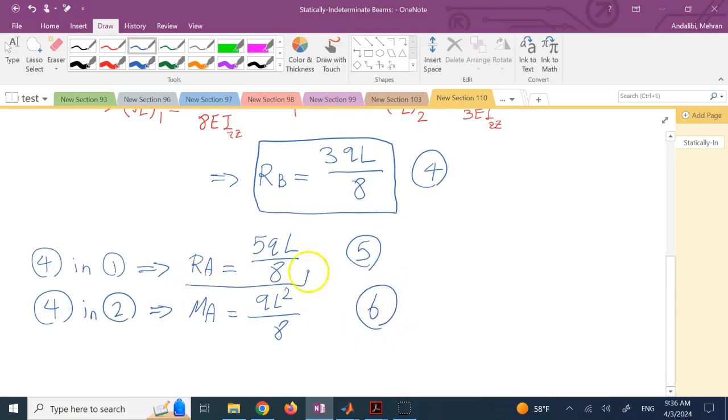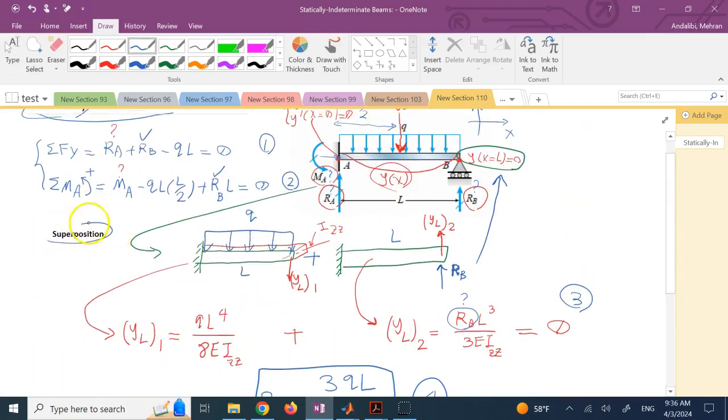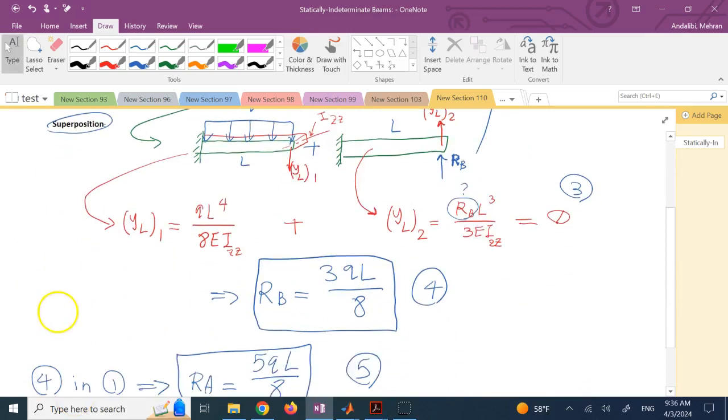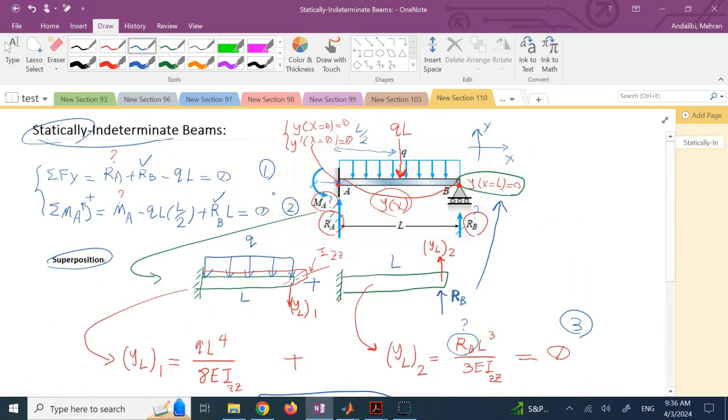You see? I used the superposition of the deflections at the end—or any point could be, but typically for this kind of loading we have the maximum deflection at the end for this condition. That gives us an extra equation. Now with three equations and three unknowns, I can solve for everything. So I used the equilibrium plus the motion constraint. Hopefully this video was useful to you. I'll see you in the next lecture. Thank you.